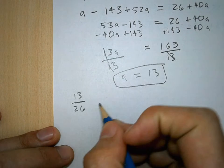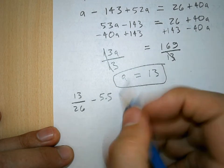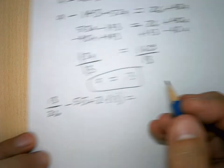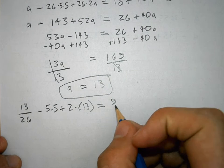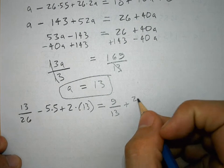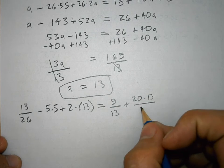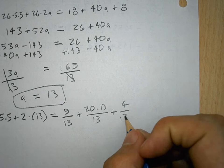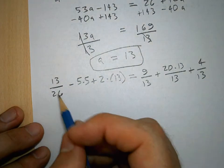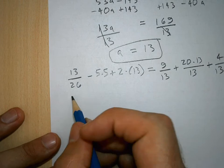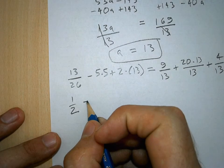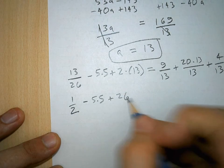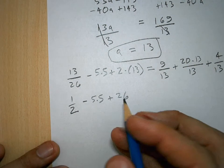So, we have 13 divided by 26 minus 5.5 plus 2 times 13. I'm just using some parenthesis there. And all that equals 9 divided by 13 plus 20 times 13 over 13. So, we have some common denominators over here. It'll actually be quite easy to add these all together. So, first of all, 13 over 26, this simplifies to be one half. This over here then, it's minus 5.5 plus 26.